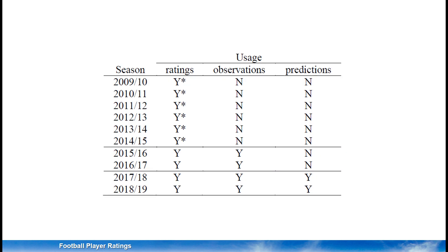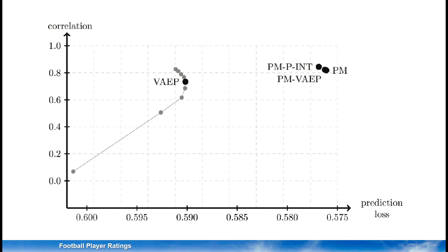We use a model to predict match outcomes based on the difference in average ratings for players in the starting lineups of the teams involved, where better ratings should lead to better predictions and a smaller prediction loss. For predicting match outcomes, we first use six seasons to bootstrap player ratings, then two seasons to train the prediction model, and finally two seasons to make predictions that are evaluated using statistical loss functions.